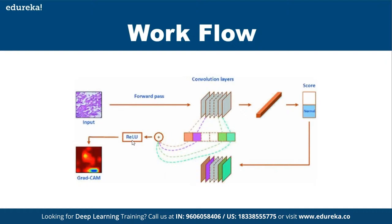Up to the ReLU part, that's the CNN portion. ReLU is an activation function whose main job is: whenever there are negative values in the matrix of the image, it makes them zero. If there is a non-negative, non-zero value, it keeps the value as is. The last convolution layer output is passed to Grad-CAM, which is essentially a visualization technique to identify on what basis the CNN identified a particular image.